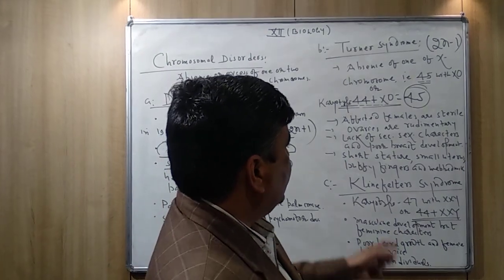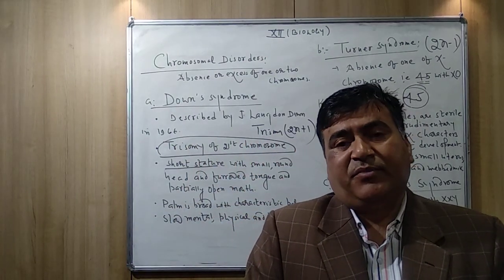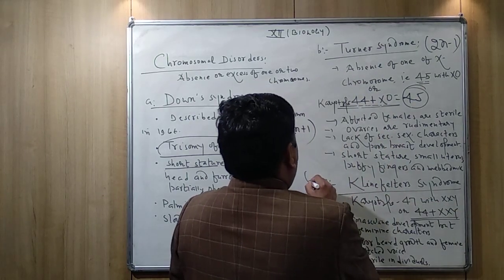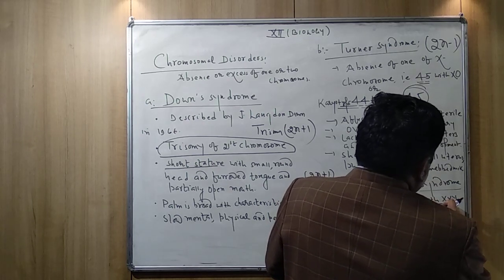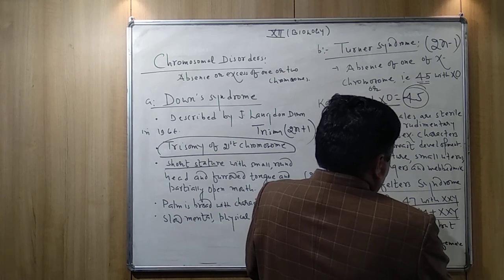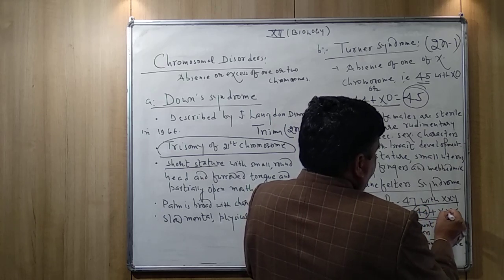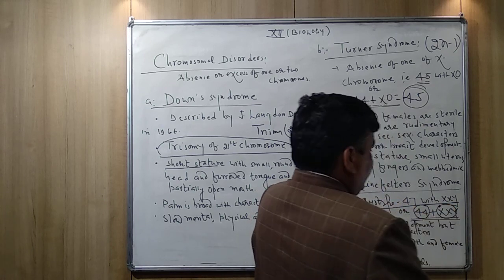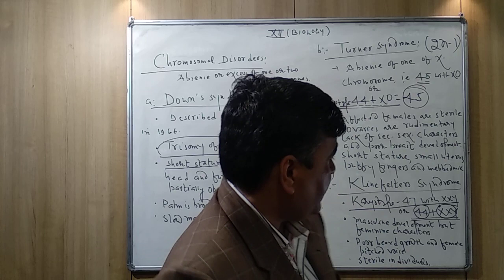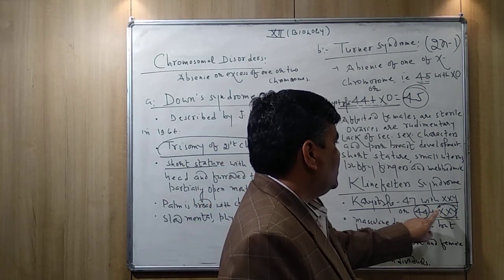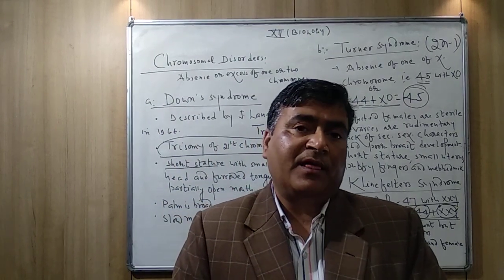The last disorder is Klinefelter syndrome, which is also an example of trisomy. The formula is 2n+1. The karyotype is 47,XXY, which can also be written as 44+XXY, where 44 are the autosomes. One X chromosome is additional in the basic sets of chromosomes, making the total number 47.